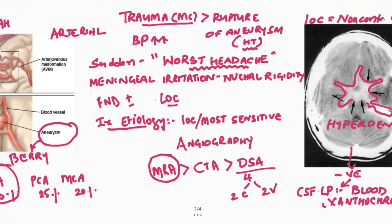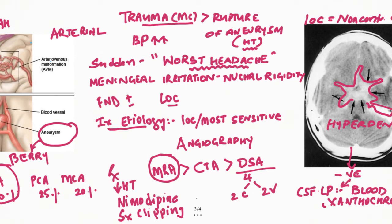For treatment, first control the blood pressure and manage hypertension. Comatose patients will need intracranial pressure monitoring. Avoid any anticoagulants, and add nimodipine to the treatment to prevent vasospasm. If the hemorrhage is due to an aneurysm, surgical clipping should be done. If hydrocephalus develops, ventricular drainage can also be tried. This is all about subarachnoid hemorrhage.